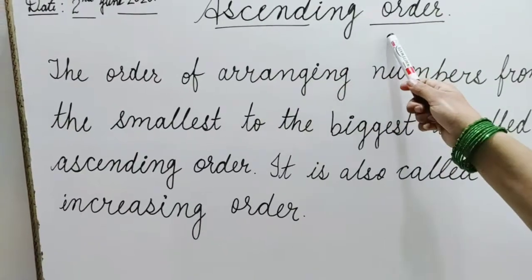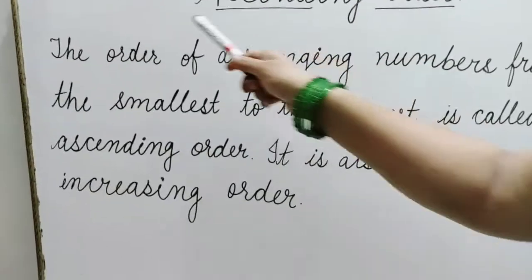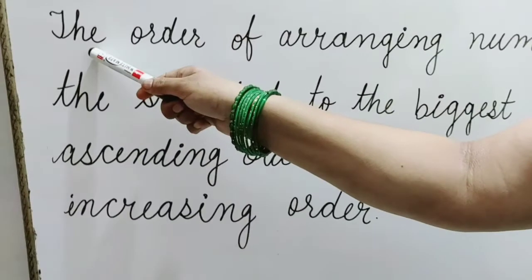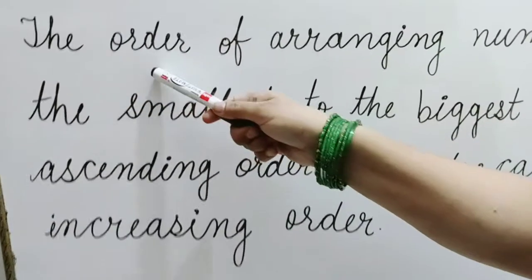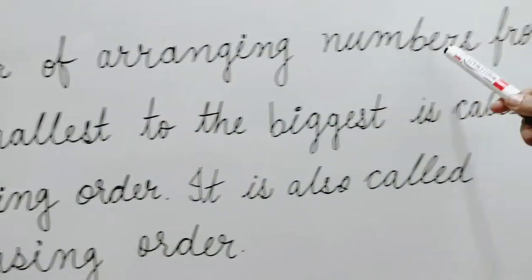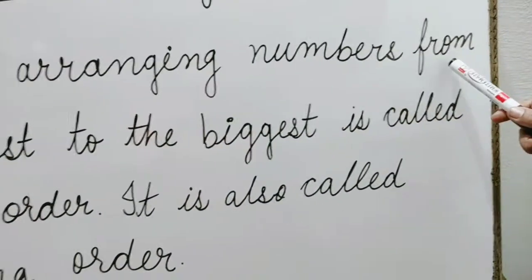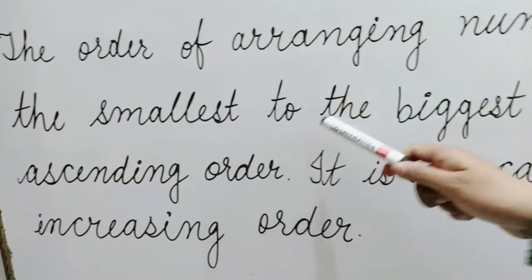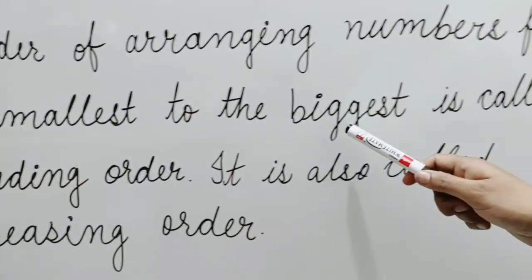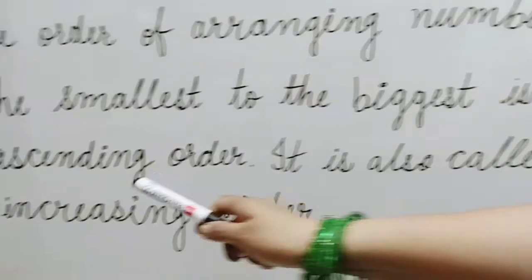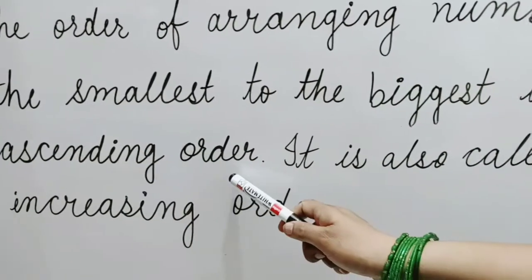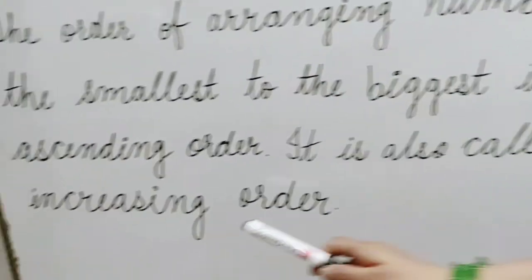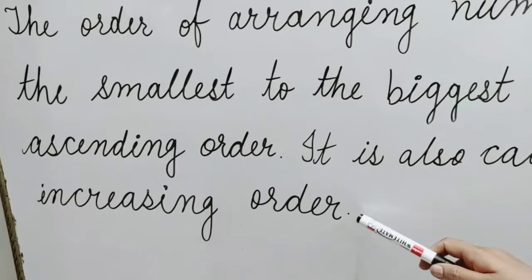Ascending order. The order of arranging numbers from the smallest to the biggest is called ascending order. It is also called increasing order.